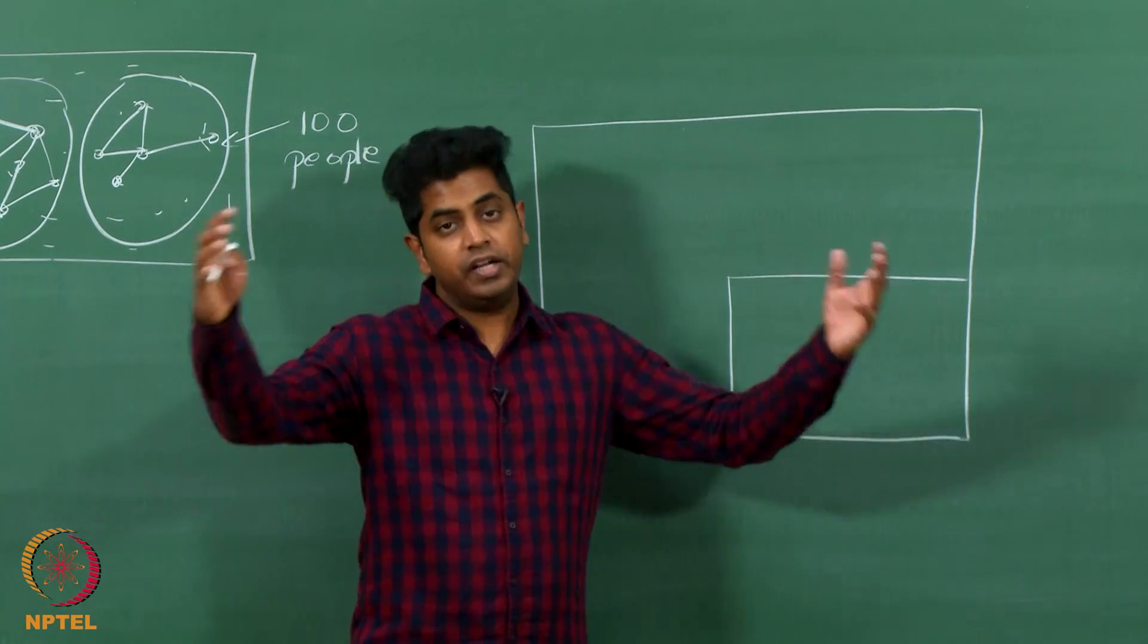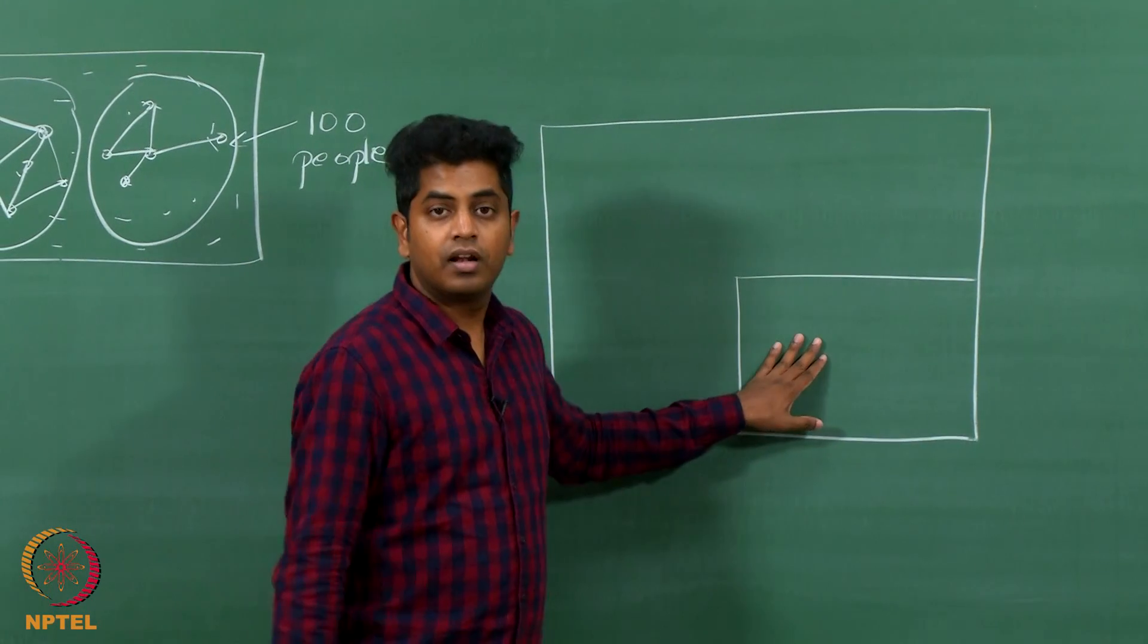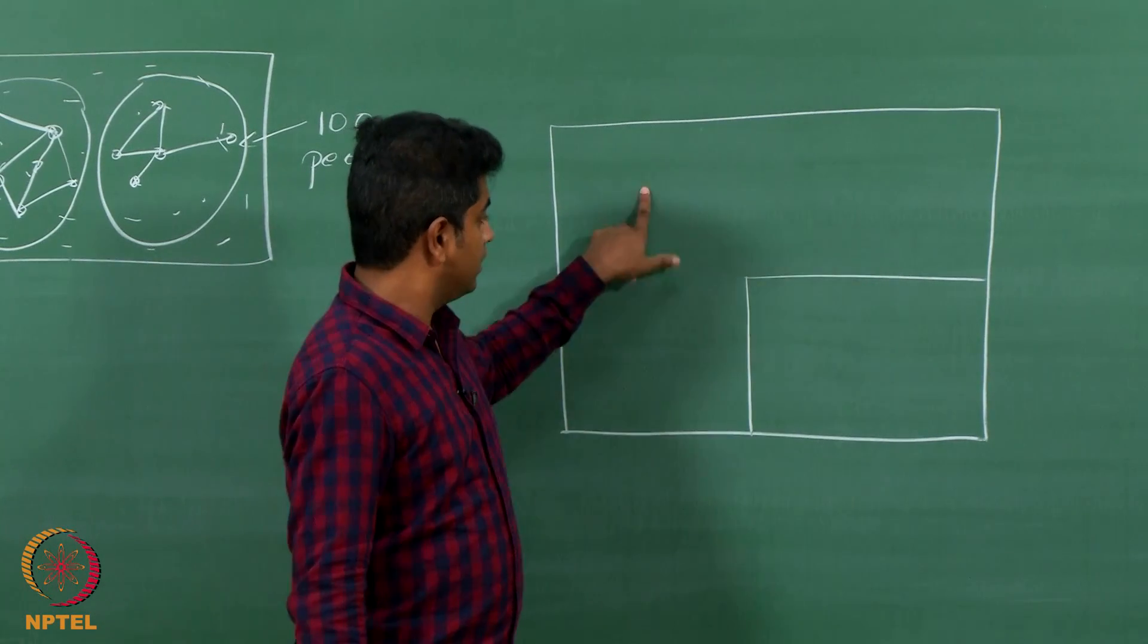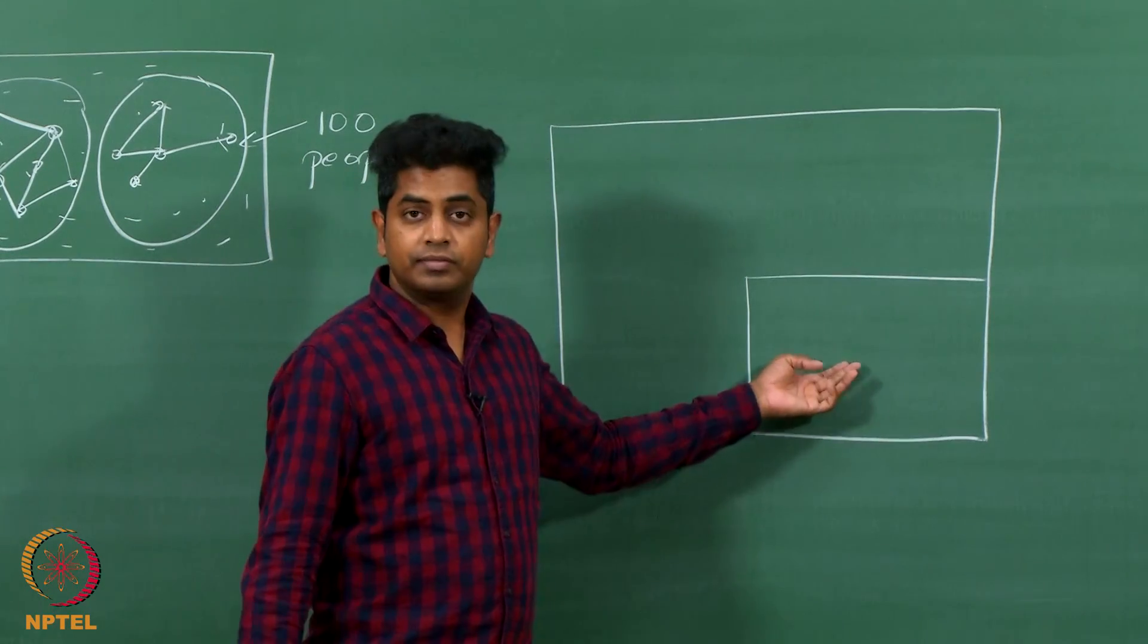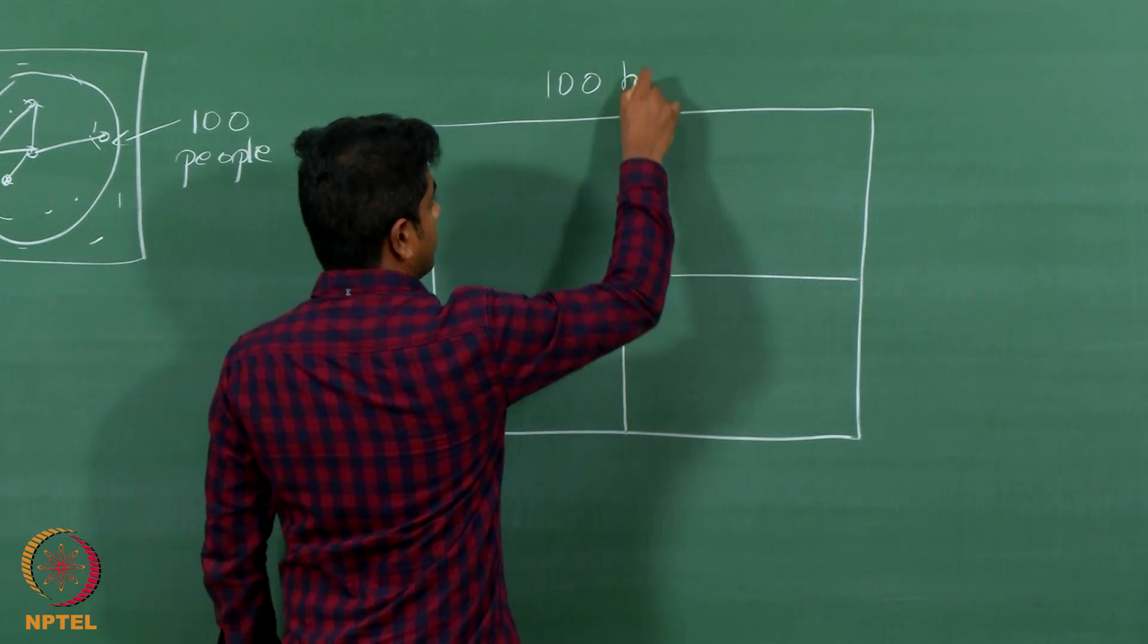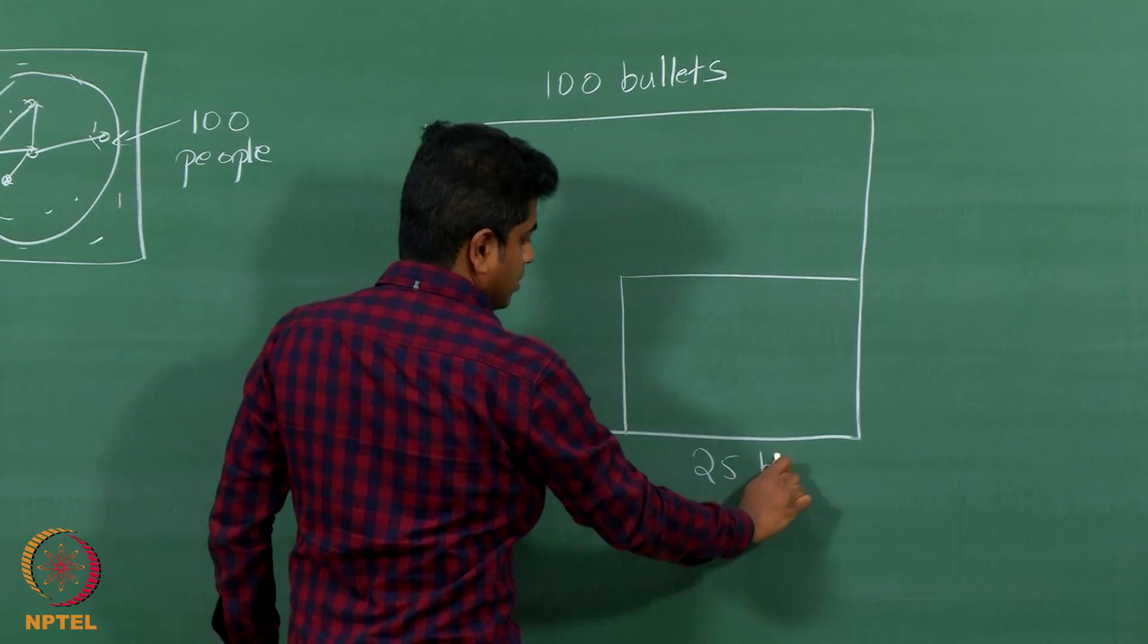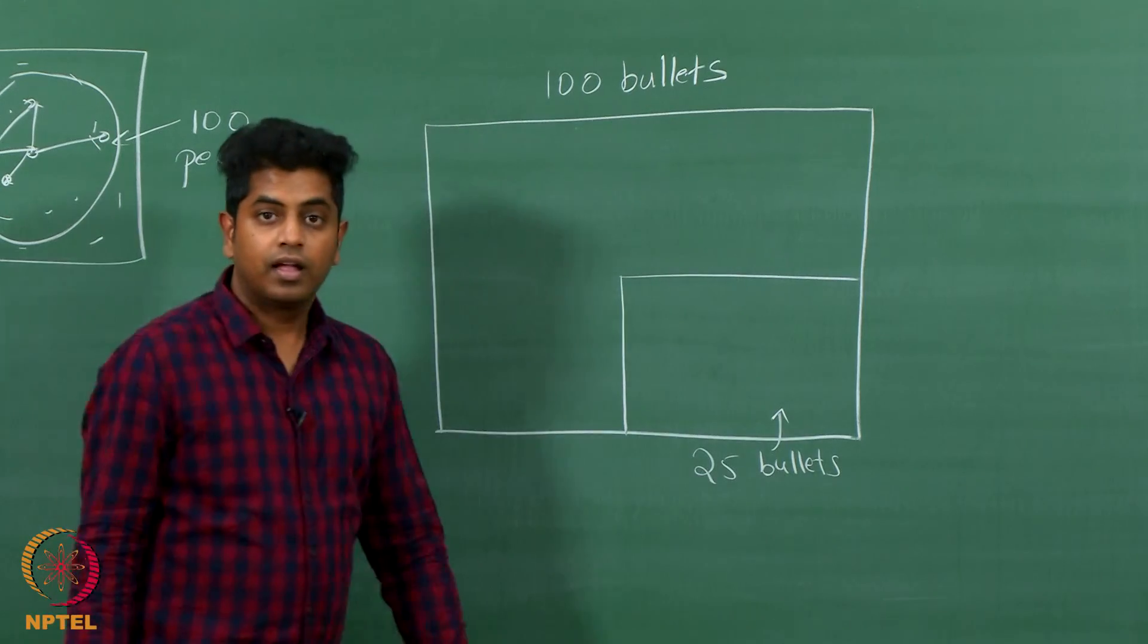The assumption here is that you are shooting uniformly at random. You are blindfolded and you are simply shooting, and all your bullets are coming within this rectangle. I will ask you, how many bullets came here? Let us say you shoot 100 bullets. If you are shooting uniformly at random, isn't it very obvious that this captures one-fourth the total area? So one-fourth the bullets should come and fall here.